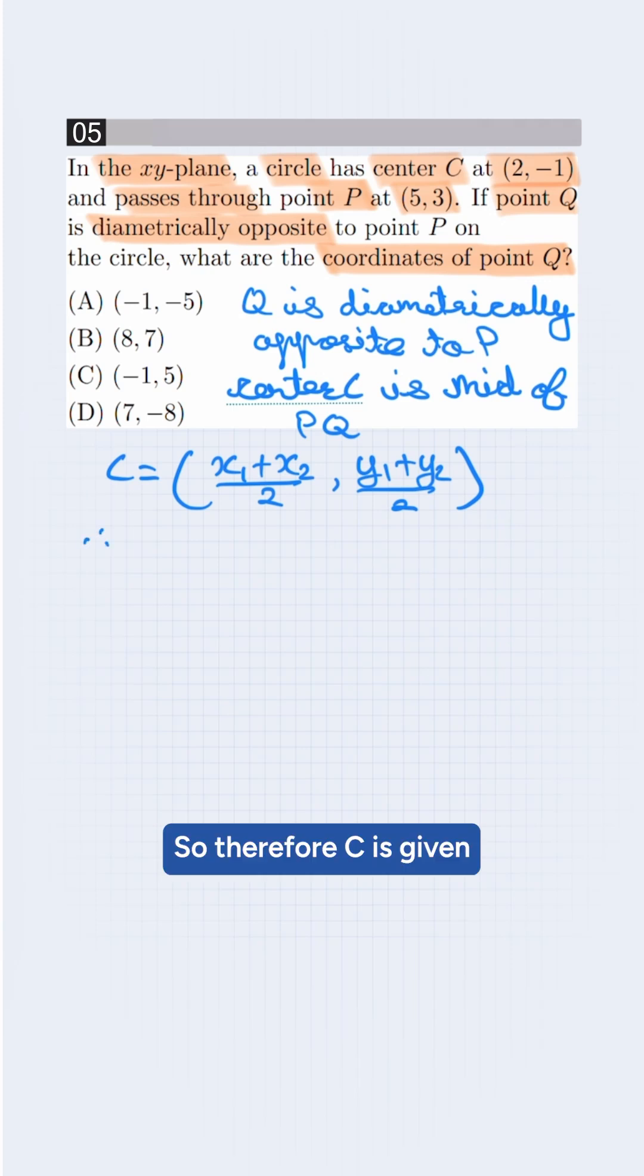So therefore C is given which is 2 comma minus 1 and P is given which is 5 comma 3. We need to find Q which is x comma y. So we set up the equations.